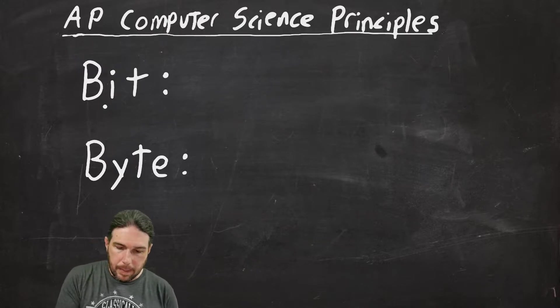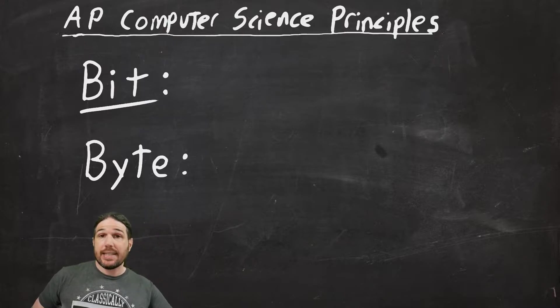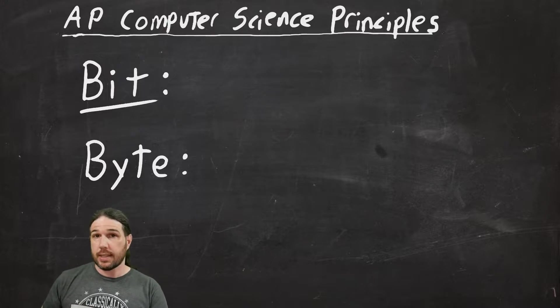So let's start with a bit. A bit is the smallest amount of information that a computer can process. It is a single binary choice.